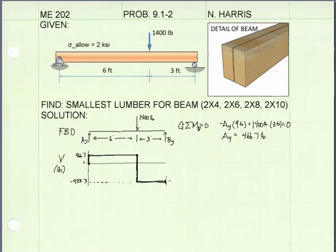We will remain constant over the next 3 feet, and then we will jump back to 0. So the reaction at B must be equal to 933.3 pounds. So our maximum shear, we can see from the shear diagram, is 933.3 pounds. I don't show the negative sign because it's the magnitude that's most important to us.